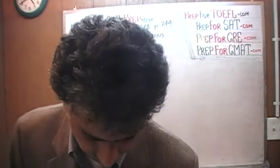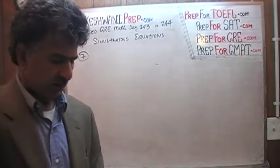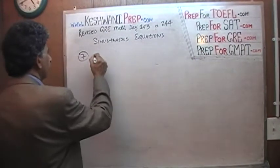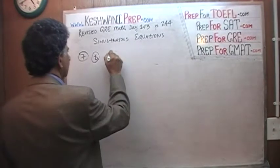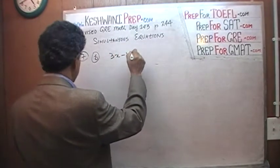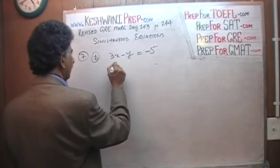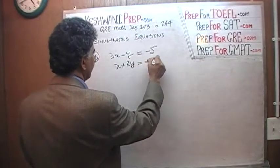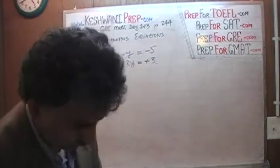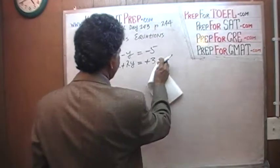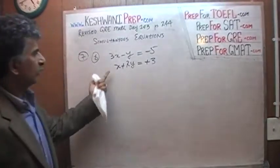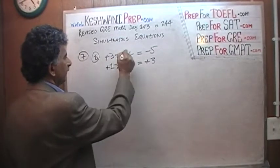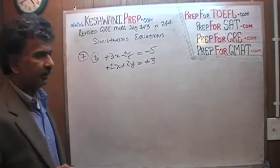Number 2. That was a very simple scenario — too simple in fact. I don't think you will see something as simple as that on the exam. The next problem is: 3x minus y equals negative 5 and x plus 2y equals positive 3. Something like this you will see on the exam. This is not as simple as before, because the coefficients are all different: plus 1, plus 3, negative 1, negative 2.